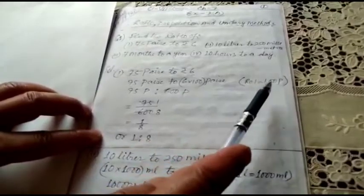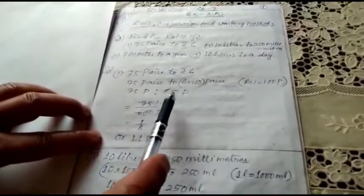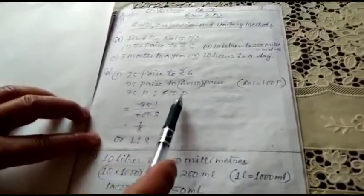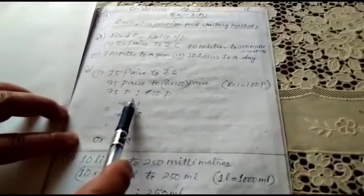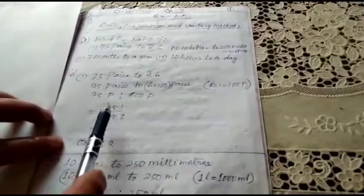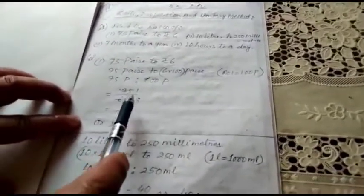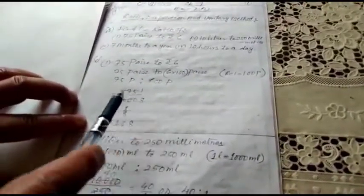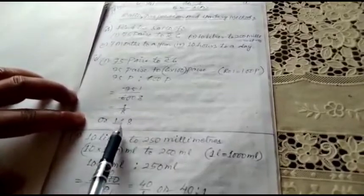Because we know 1 rupee equals 100 paisa, so 6 into 100 equals 600 paisa. Now both units are in the same ratio: 75 paisa is to 600 paisa. Write in fraction form: 75 by 600. 75 eights are 600, so 1 by 8, or 1 is to 8.